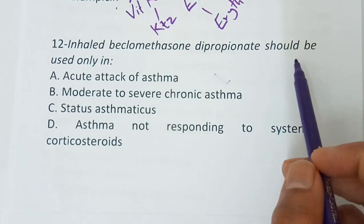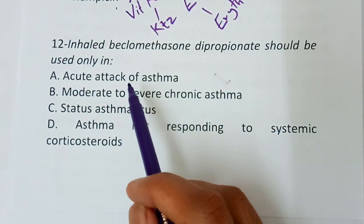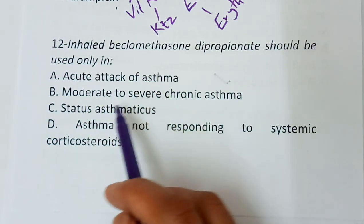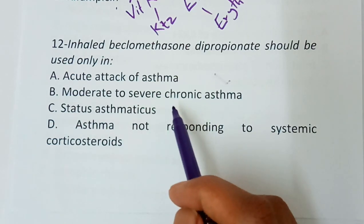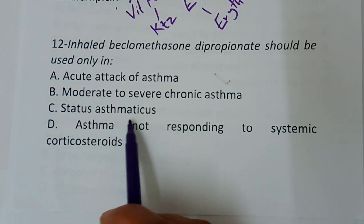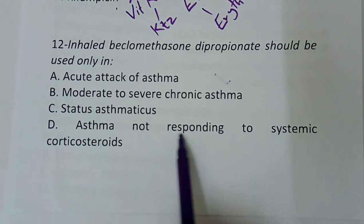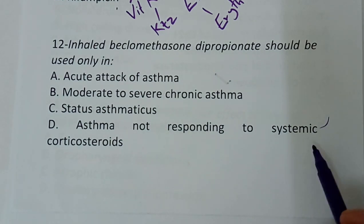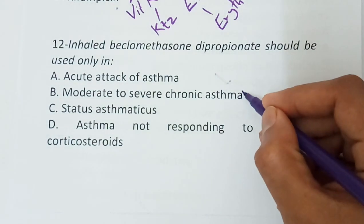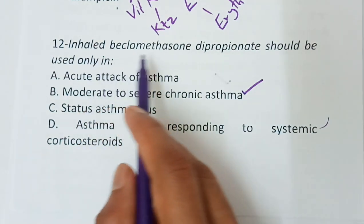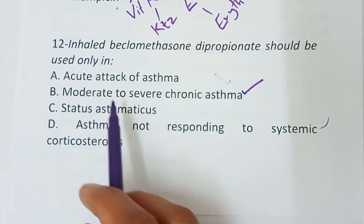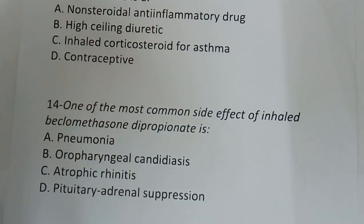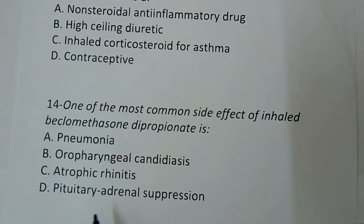Question number twelve: Inhaled beclomethasone dipropionate should be used only in — moderate to severe chronic asthma.